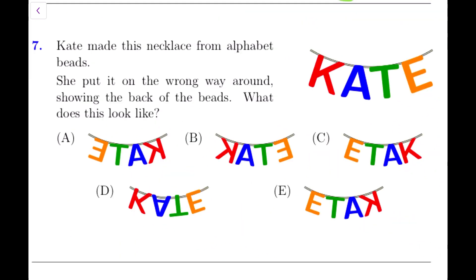Alright, so we are on question number 7. This is quite an interesting question. Kate made this necklace from alphabet beads. She put it on the wrong way around, showing the back of the beads. What does it look like? Remember, when we look at it from behind, imagine the alphabet is hanging up in the air and you're going to the other side trying to read it. The K will not go first, it would be the E that will be visible from the first side. So let's see how many options do we have with E as the first. We have A with E in the beginning, we have C, and we have E. So B and D cannot be the right answers.